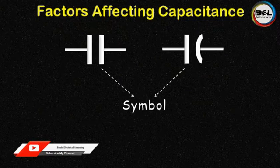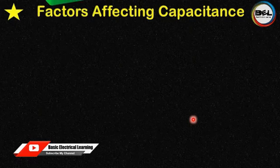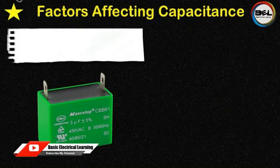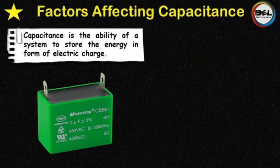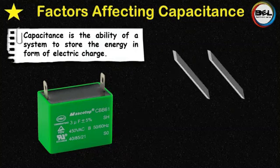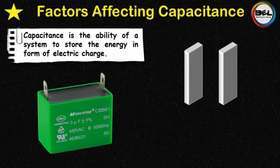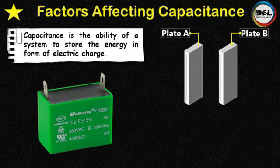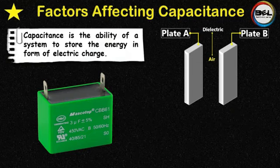There are the symbols of capacitors that are used in electrical circuits. Capacitance is the ability of a system to store energy in the form of electrical charge. Basically, a capacitor consists of two plates. In our situation, we say there are two parallel plates — plate A and plate B. The third material is the dielectric, which is used between the plates. In our situation, the dielectric material is air.